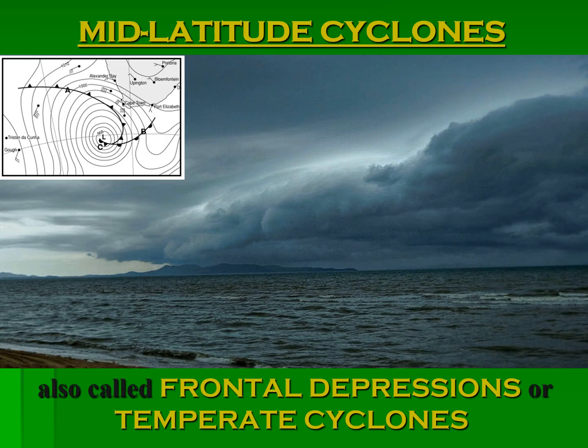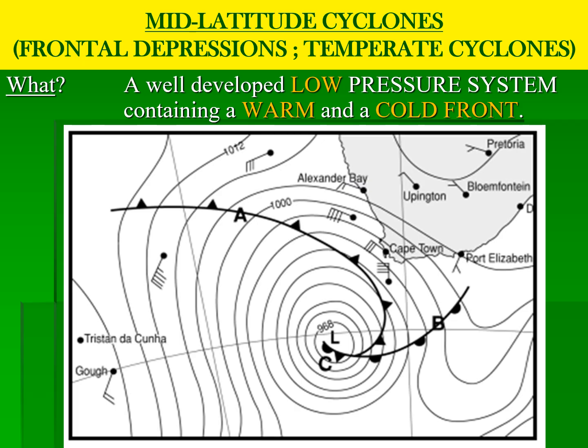Mid-latitude cyclones are also called frontal depressions or temperate cyclones, and sometimes also called extra-tropical cyclones. It is important to remember that a cyclone is a low pressure system, and therefore everything that you know about low pressure cells and low pressure systems will apply to the mid-latitude cyclone. The mid-latitude cyclone is a well-developed low pressure system which contains both a warm and a cold front.